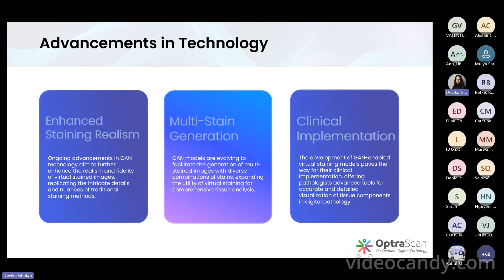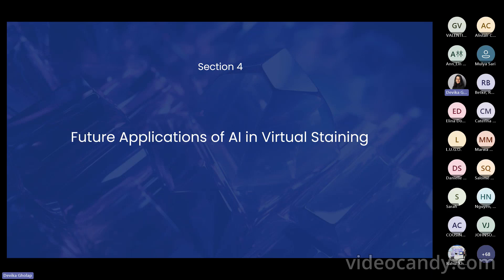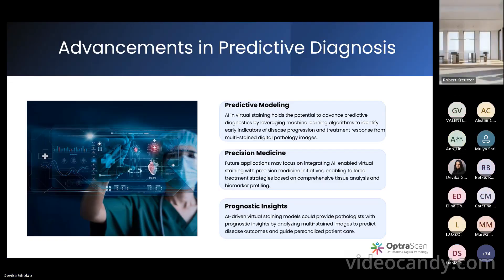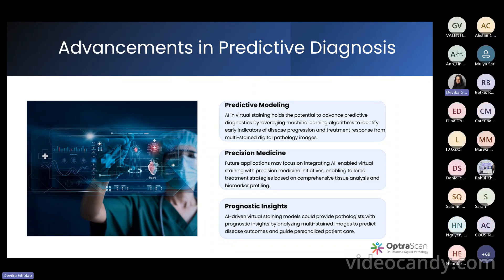The development of GAN-enabled virtual staining paves the way for clinical implementation, offering pathologists advanced tools for accurate and detailed visualization of tissue components in digital pathology. Looking at the future of this technology — virtual staining is itself the future of pathology. The biggest focus would be on precision medicine. AI and virtual staining hold the potential to advance predictive diagnosis, leveraging machine learning algorithms to identify early indicators of disease progression and treatment response from multi-stained digital pathology images.